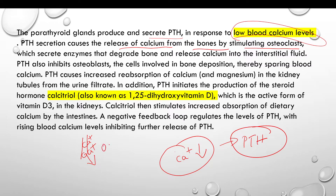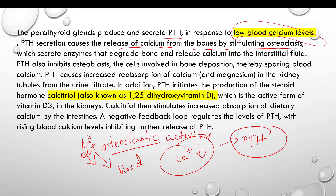Calcium does not concentrate into the blood circulation on its own. That is why osteoclastic activity is triggered. In our bones, we use osteoclastic activity to release calcium into the blood.